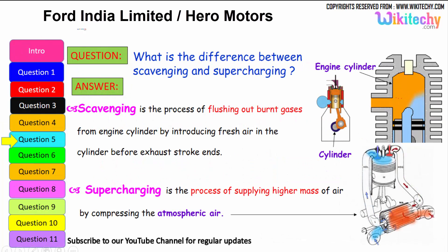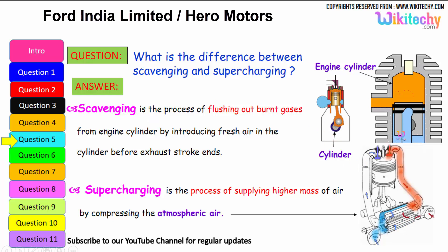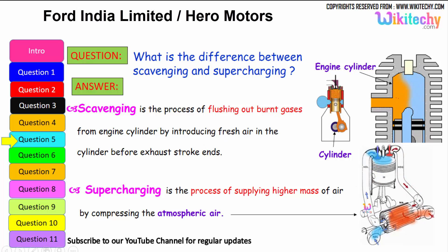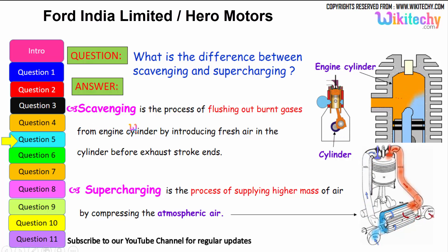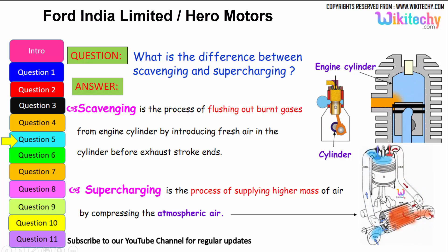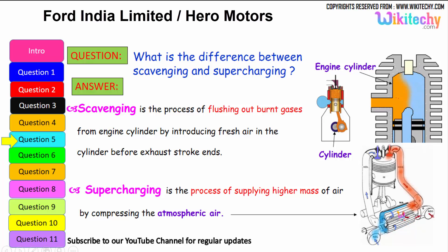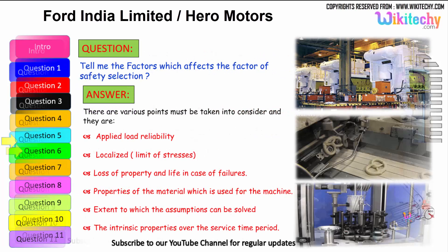Let us move to the next question: what is the difference between scavenging and supercharging? Scavenging is the process of flushing out the burnt gases from the engine cylinder by introducing fresh air into the cylinder before the exhaust stroke ends. Supercharging is the process of supplying high-density masses of air by compressing air above atmospheric pressure, allowing high-pressure air to be injected into the cylinder.